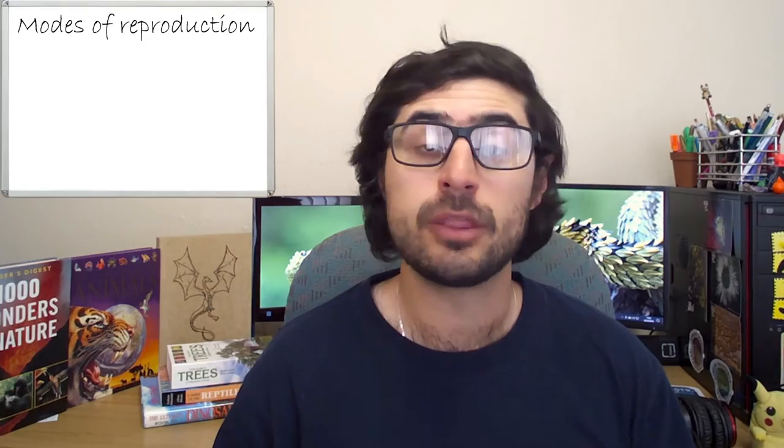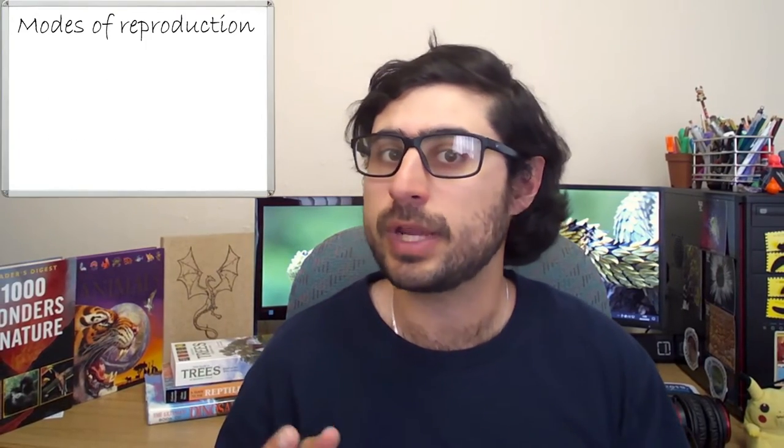I'm sure most of us have seen eggs, like this chicken egg, and that we know that it comes from a chicken. But chickens are not the only animals that can lay eggs. In fact, the majority of vertebrates — those are animals with backbones — lay eggs. And the process of egg laying, or rather the trait of egg laying, is referred to as oviparity or ovipary. Therefore, animals that lay eggs are called oviparous.